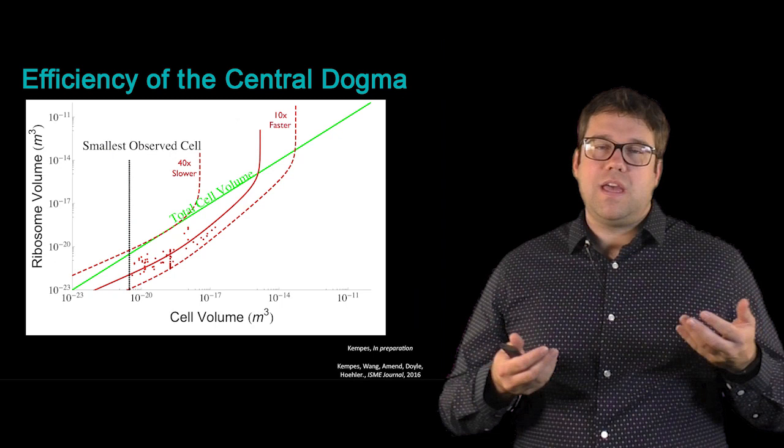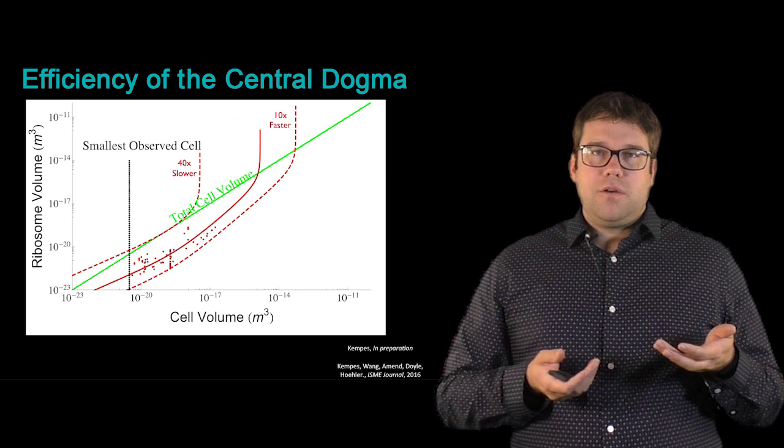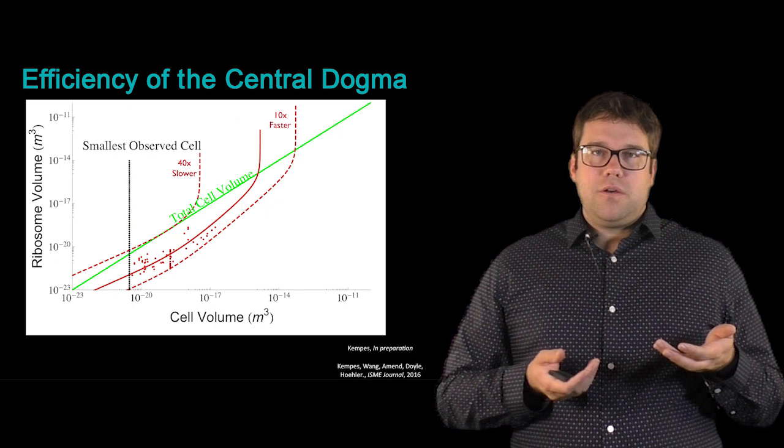This says that if early evolution, before encapsulation, say, had found ribosomes that were very slow, it wouldn't be able to encapsulate those. What the ordering of those events are is still being worked out, but this is one perspective on what might be possible or impossible.